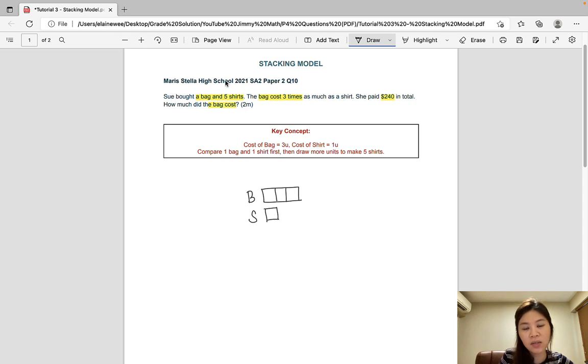So since Sue bought five shirts, we should have five of such units. So let's stack it below. And now we have five units representing five shirts.